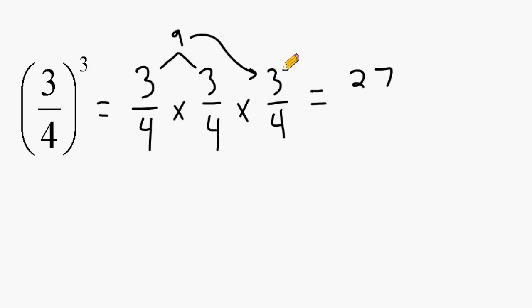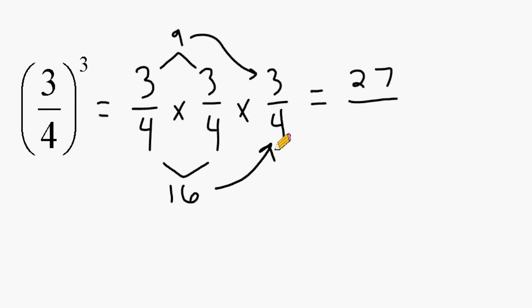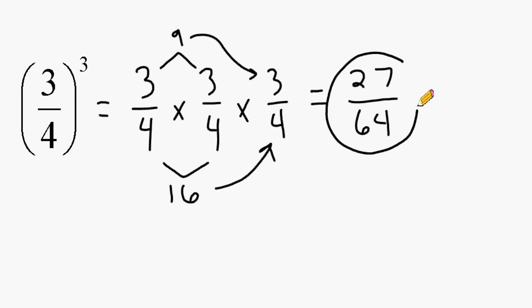So 3 to the third power is 27. Now we have to raise 4 to the third power, or 4 times 4 times 4. 4 times 4 is 16, and 16 times 4 is a product of 64. So 3 fourths to the third power is equal to 27 sixty-fourths.